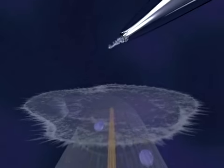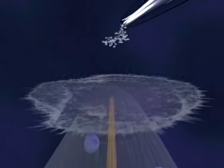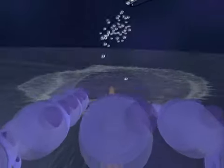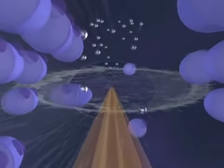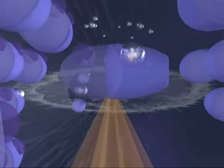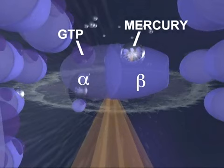When mercury ions are introduced into the culture medium, they infiltrate the cell and bind themselves to newly synthesized tubulin molecules. More specifically, the mercury ions attach themselves to the binding site reserved for guanosine triphosphate, or GTP, on the beta subunit of the affected tubulin molecules.